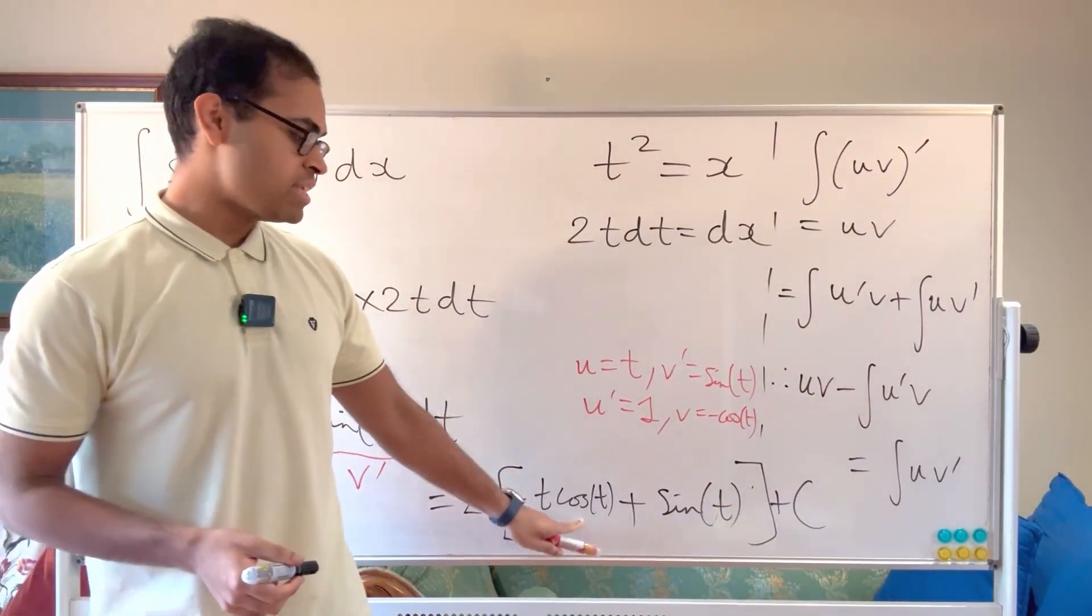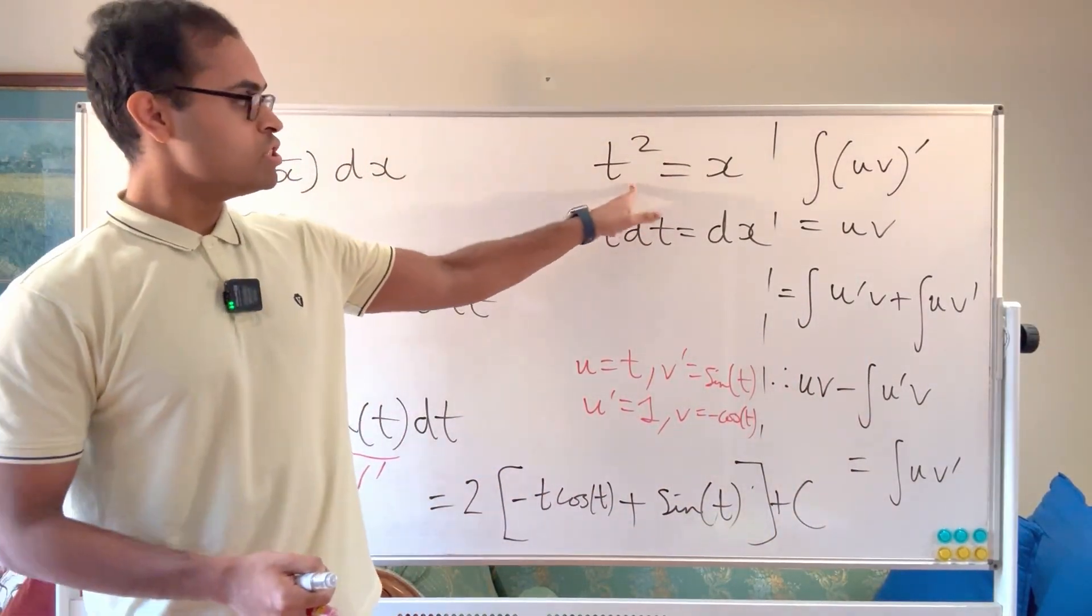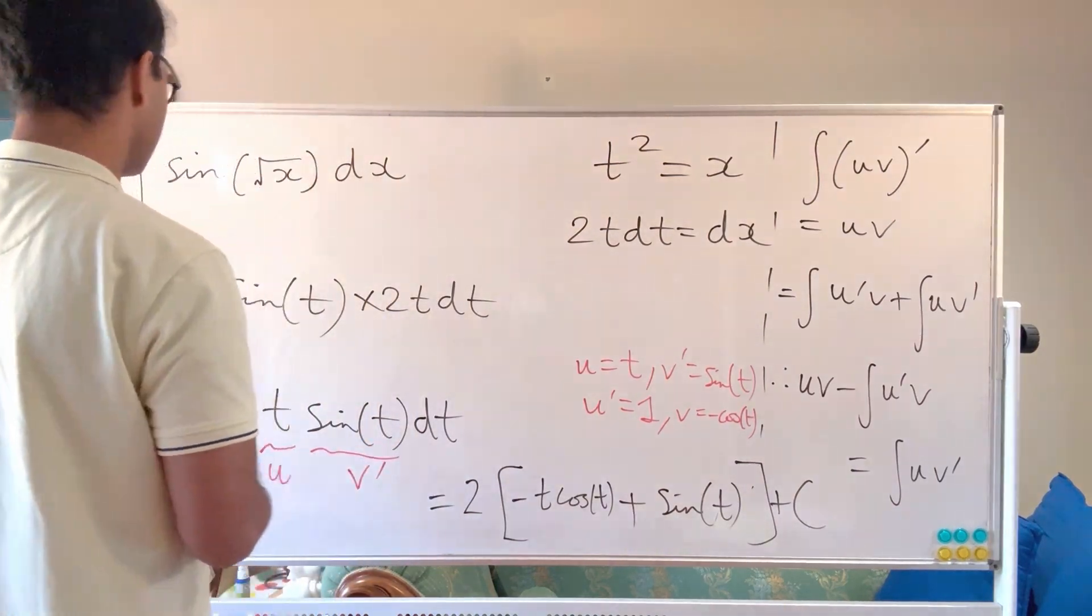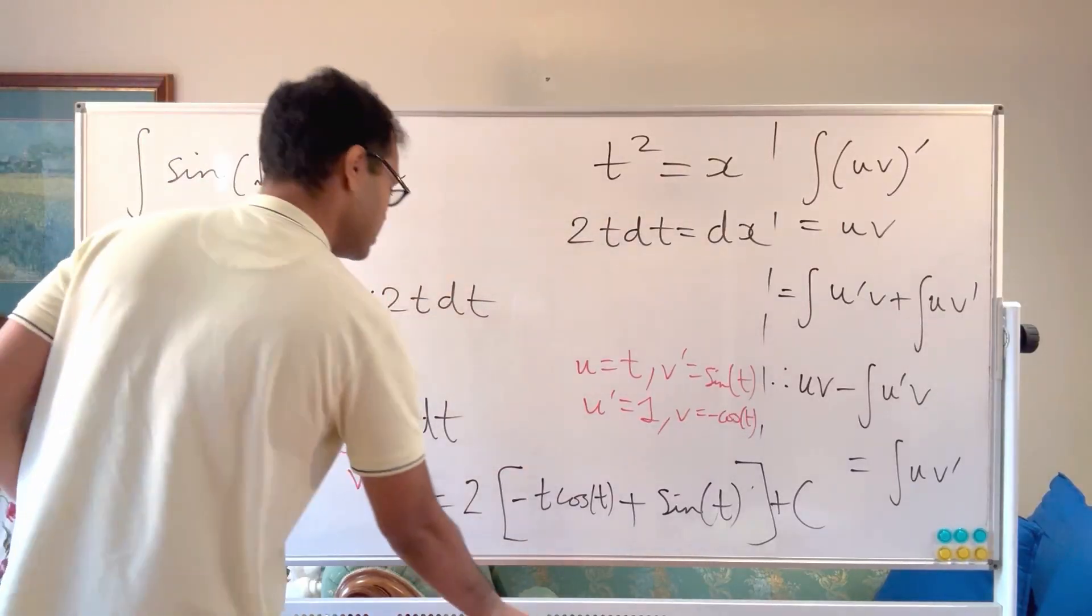But of course, we have to now replace our t by our original substitution, t squared is x. So t is going to be the square root of x. So I'm just going to actually write this out right now here. I'm just going to erase this.